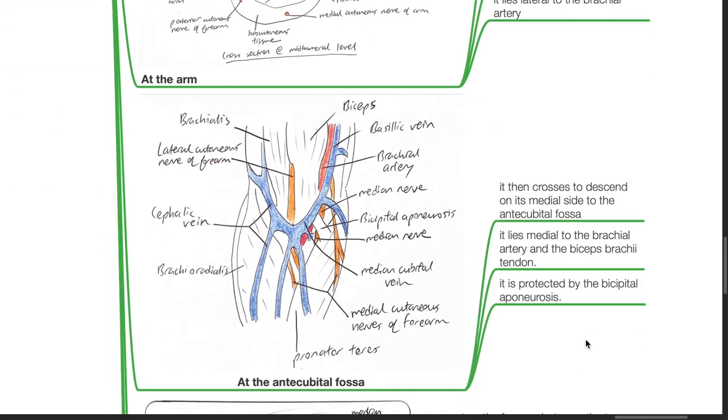At the anticubital fossa, it then crosses to descend on its medial site to the anticubital fossa and lies medial to the brachial artery and the biceps brachii tendon. It is protected by the bicipital aponeurosis.